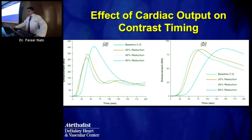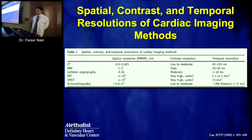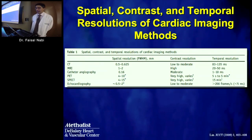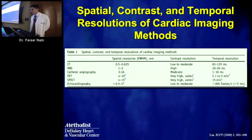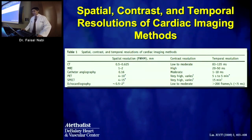Cardiac output significantly affects contrast timing—as cardiac output falls, enhancement falls and time to peak enhancement takes longer. In a comparison of imaging modalities: invasive angiography has the best spatial resolution, followed by cardiac CT. Cardiac MRI has the best contrast resolution. Echo has by far the best temporal resolution, and catheter angiography also has very high temporal resolution. SPECT has the worst spatial and temporal resolution among these modalities.